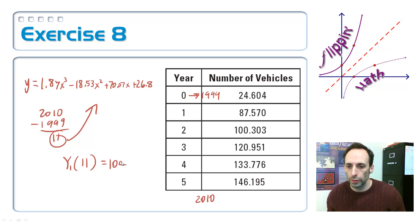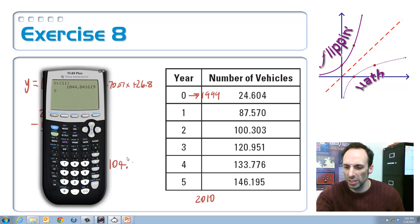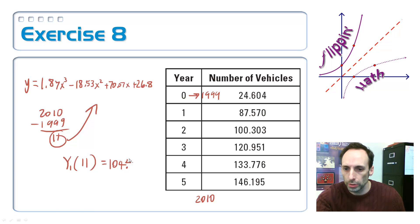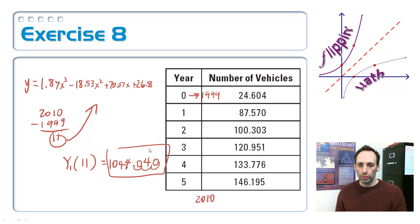Now this is in thousands, so really I need to move this decimal place over uno dos tres places. So that's really how many vehicles I should have expected in 2010 to be using ethanol 85. How accurate is that? I don't know. I don't use that kind of gas.